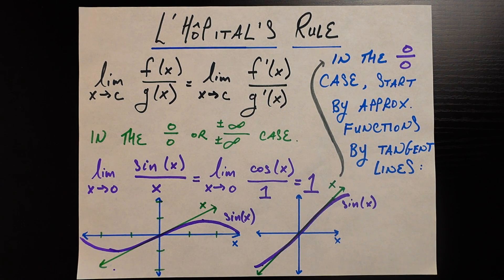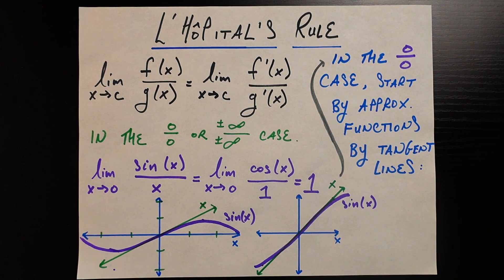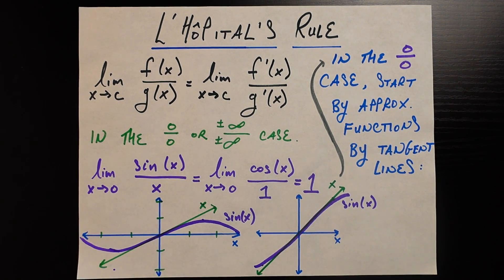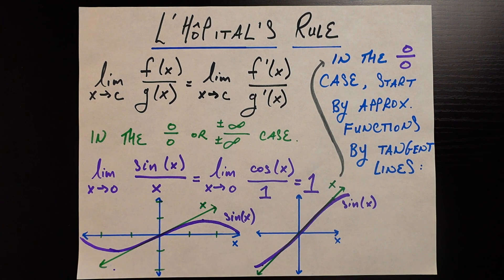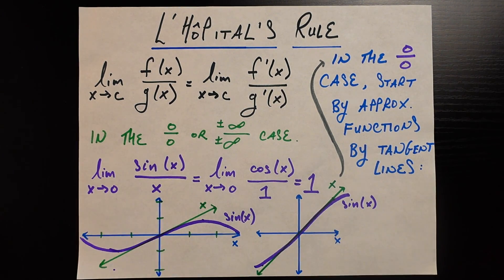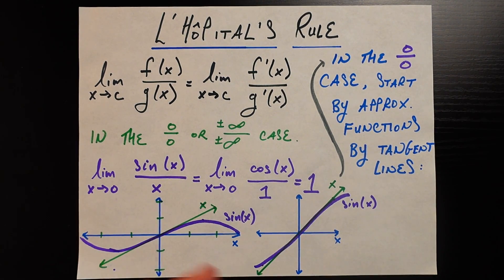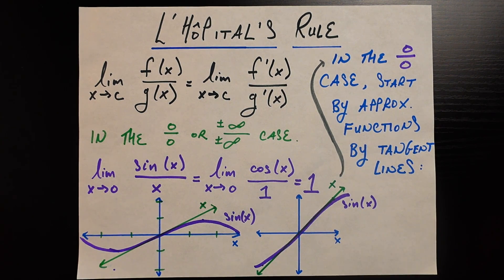Coming back to the point of the video — if we're trying to solve problems like this, here's one you may have seen in calculus: compute the limit as x approaches zero of sine of x over x. If we send the numerator and denominator both to zero, we get a zero over zero case — that's no good, I don't know what to do with that. L'Hôpital's rule says no problem: take the derivative of the numerator, you get cosine of x; take the derivative of the denominator, you get one; send that to zero in the limit, and we easily see that's equal to one. Now we're done with the whole problem.